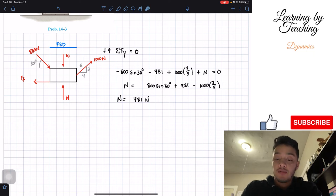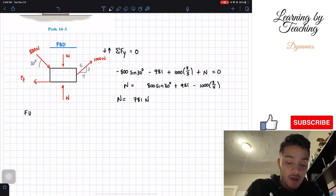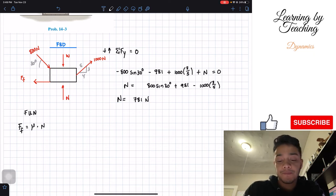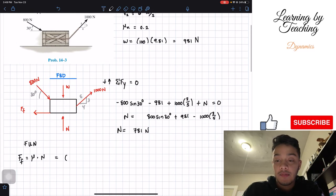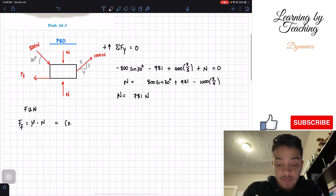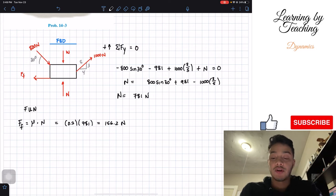So now we found our normal force, and with this normal force, we can relate it to our frictional force, knowing that the frictional force is equal to my coefficient of kinetic friction times my normal force. So if we plug in the values, my kinematic coefficient friction is going to be 0.2 multiplied by my normal force, which is 781, and if we plug this into our calculator, it will be equal to 156.2 newtons.